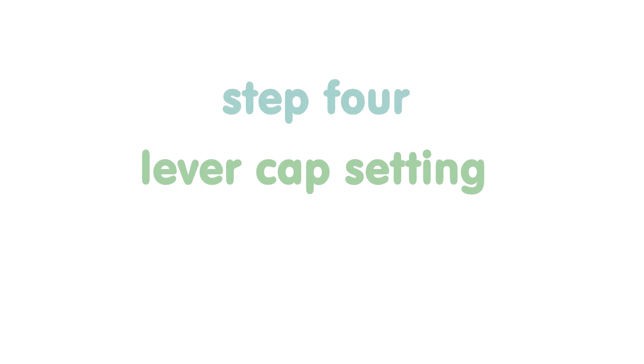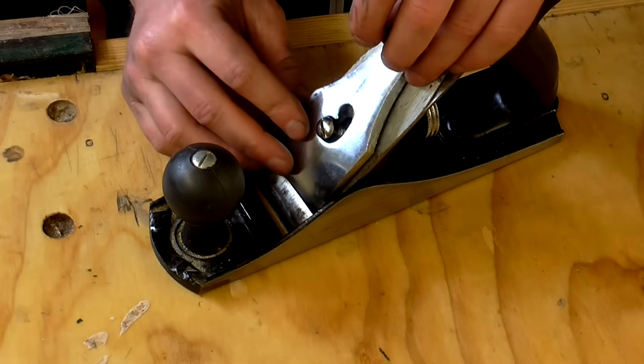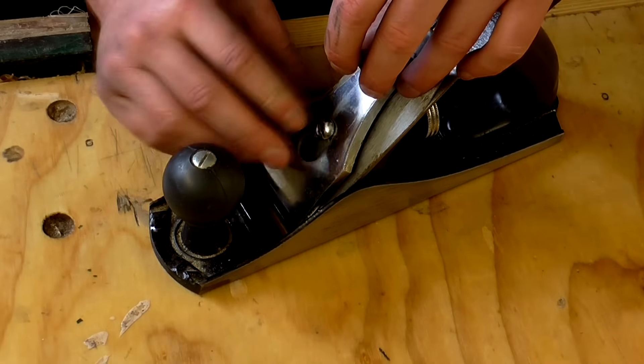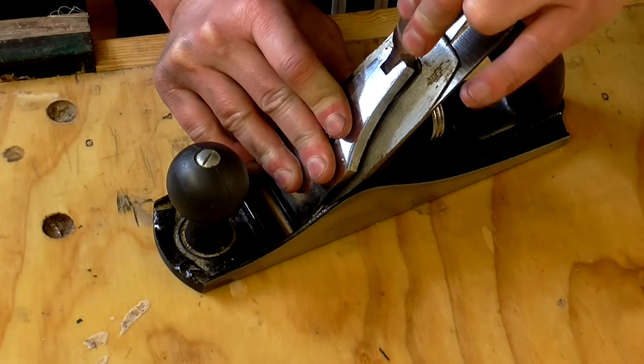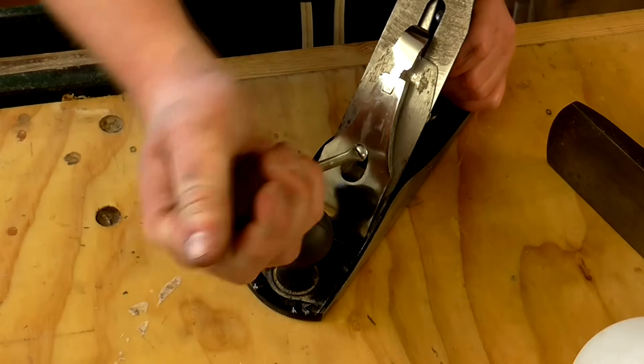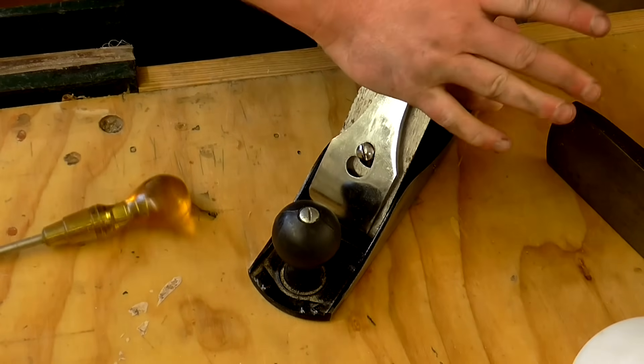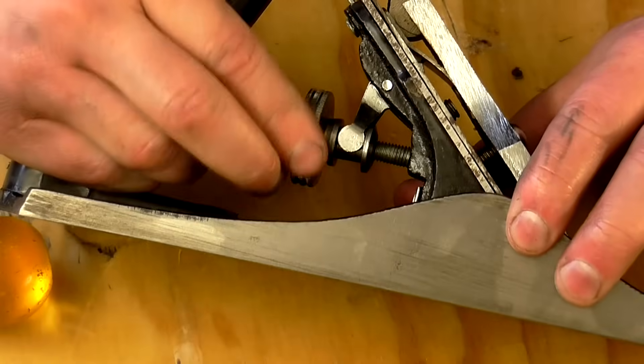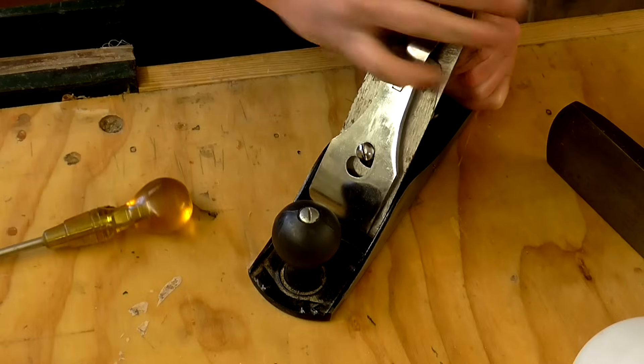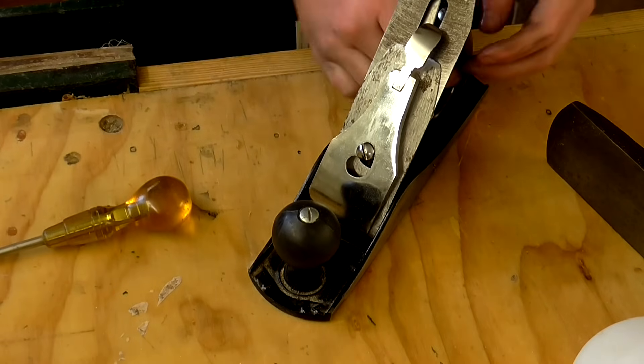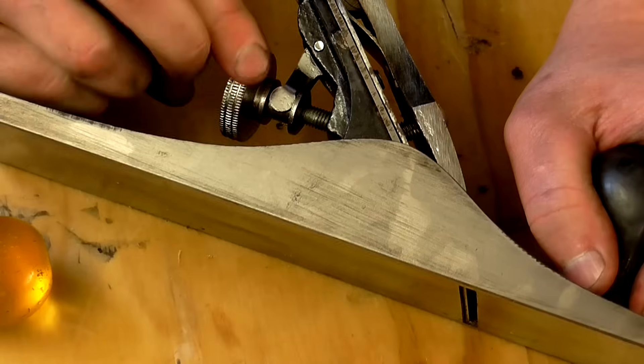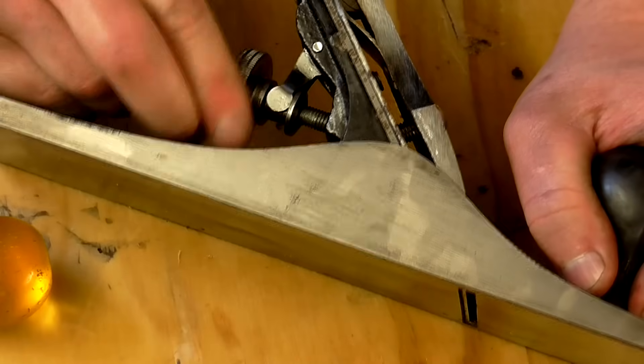Lever cap setting. The lever cap allows you to quickly remove and refit the cap iron and cutting iron at the flick of a lever. You'll see that there is an adjustment screw securing it to the plane and that controls how tight the lever mechanism is and also how tight the blade height adjustment knob is to turn, which is this part here. And you can adjust this until you get it operating just the way you want it. I like to set mine so that the adjustment knob can be twisted with one finger, which allows me to adjust it quickly and easily.